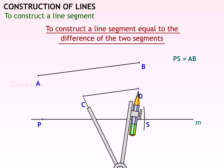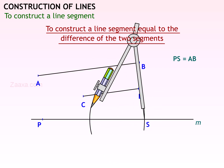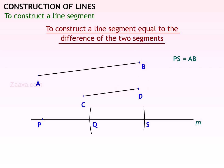Now measure CD with the compasses. Draw an arc from S and mark the point Q on the line PS, as shown in the figure. SQ is equal to CD. The length of the line segment PQ is equal to the length of AB minus the length of CD.